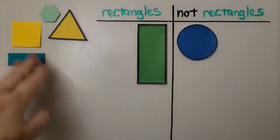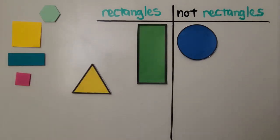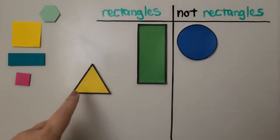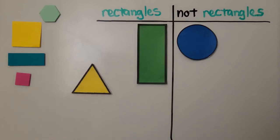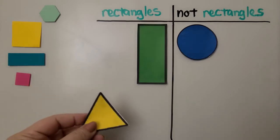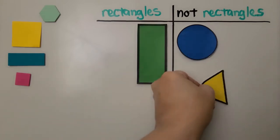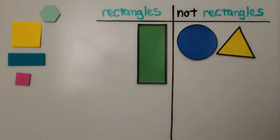Is this a rectangle? I see it has corners — it has vertices — but they're not square corners. And there's only three of them and three sides. So that's not a rectangle. Do you know what that is? That's a triangle. We can put this in the not rectangle set.